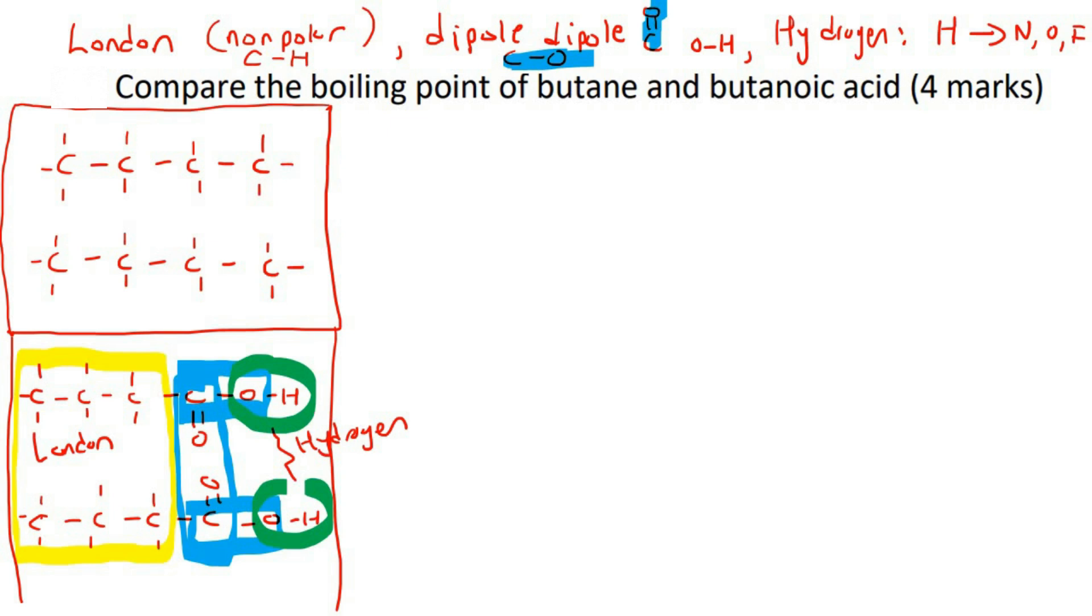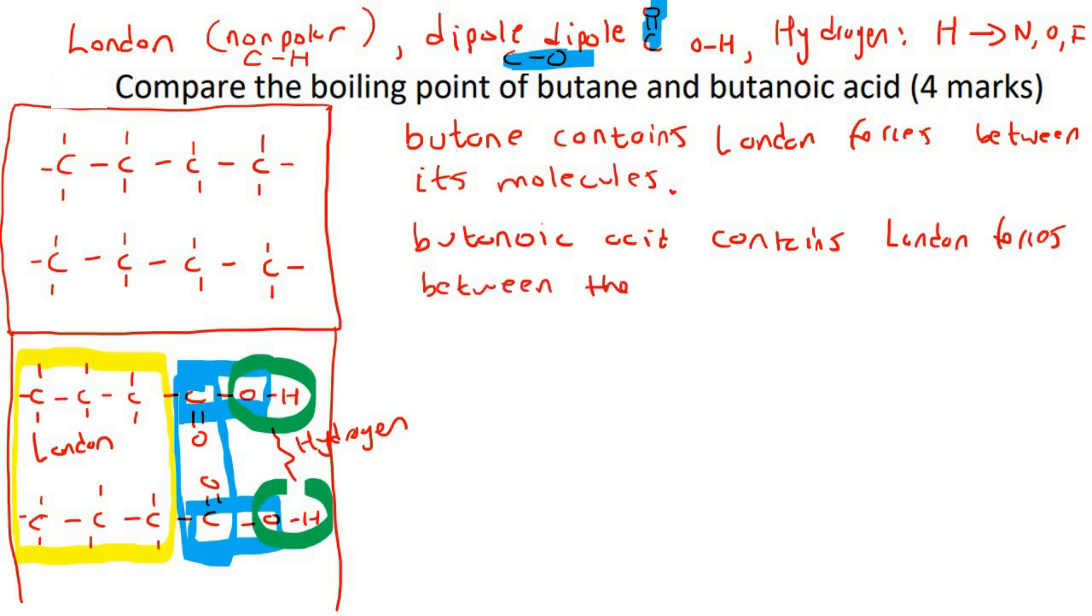So let's go put that into a formal writing now. So what you do is you break it up into four steps. Step one, just take the first molecule, which is butane, and just mention what type of intermolecular forces you can see. So we could say butane contains London forces between the alkyl, which is the carbon-hydrogen part, sections.